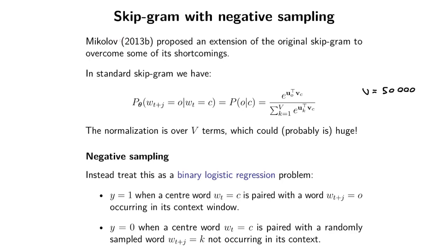The extension they proposed for Skipgram is to use Skipgram with what they call negative sampling. This is actually quite a general idea within machine learning. Basically, instead of getting the dot product of the one item you're interested in high over this entire vocabulary vector, you change the problem into something different.